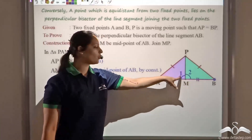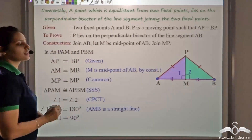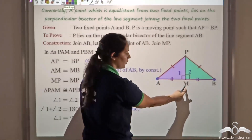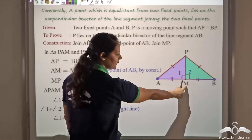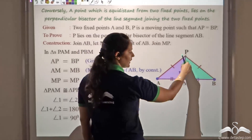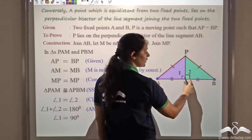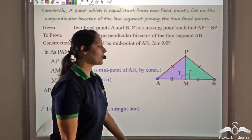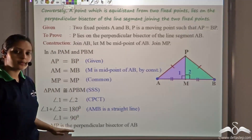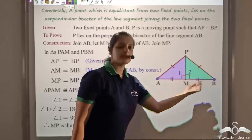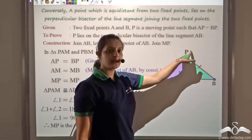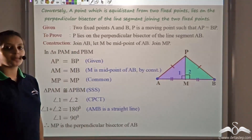Since both angles are 90 degrees and M is the midpoint, observe that PM is a line which is bisecting AB because M is the midpoint, so AM is equal to MB. Further, PM is not just bisecting the line but is also perpendicular to it because both angles are 90 degrees. So I can say that PM is the perpendicular bisector of AB. Since MP is the perpendicular bisector, P — which lies on it — is a point that lies on the perpendicular bisector of AB.